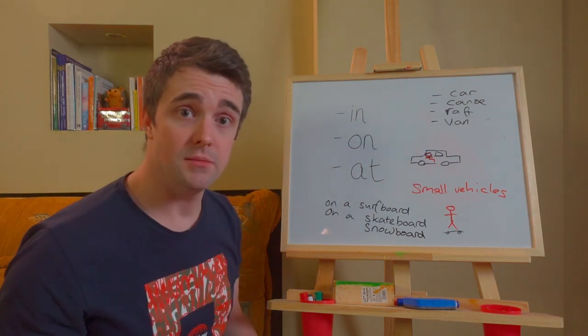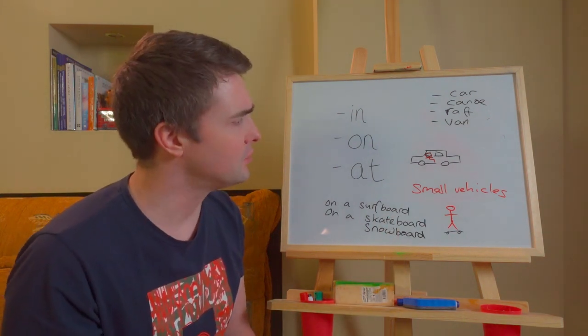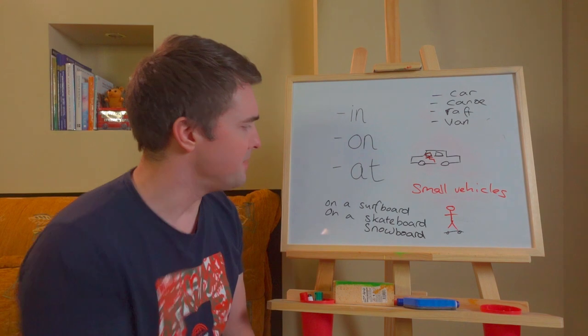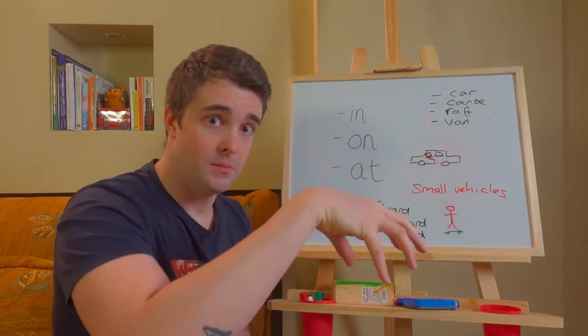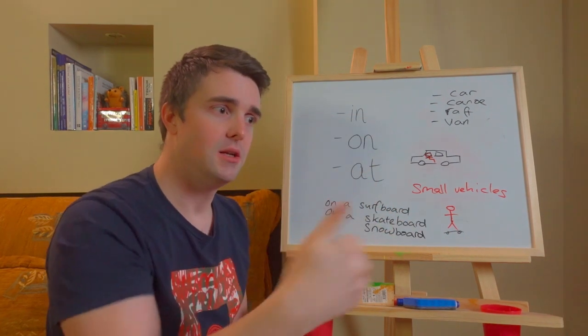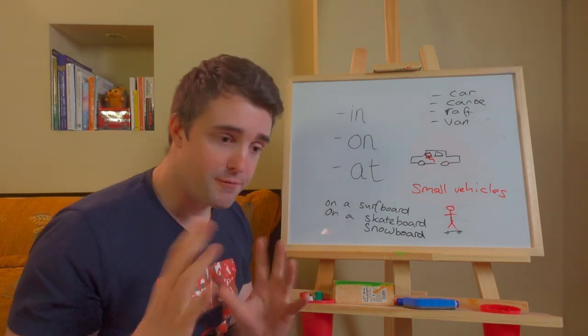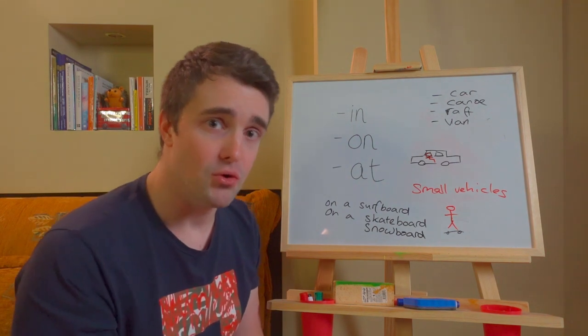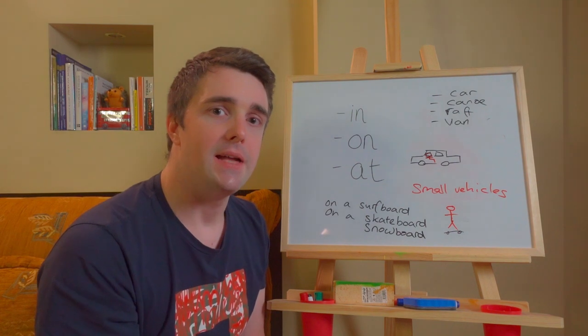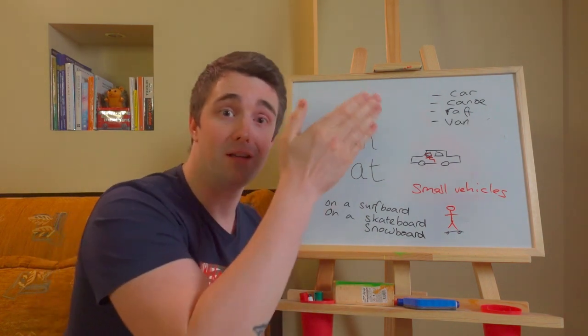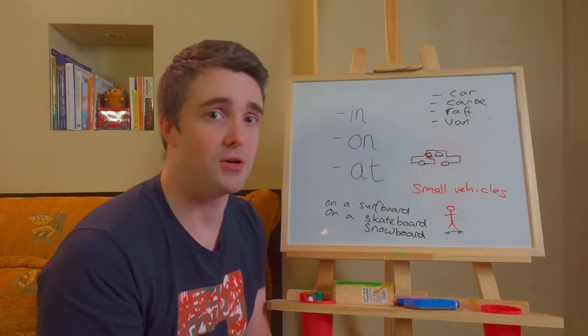So that's it. Large vehicles, we're saying on. Small vehicles, we say in. Any boards, we say on. And with buildings, you've got in. And then you've got at, which is nearby. And then you've got on the roof. If you want to deepen your understanding more, then I suggest watching the video again. Just to take it all in. Otherwise, I suggest checking out one of my other videos or heading over to see my channel trailer and find out what Hedgehog English is all about.